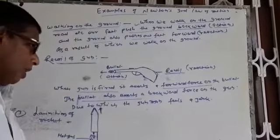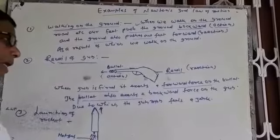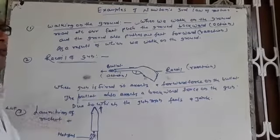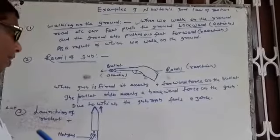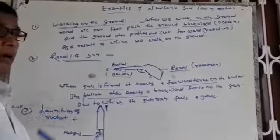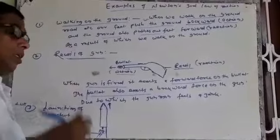Due to this, the gunman gets a backward jerk on the shoulder. That's why it is advised that when you fire the gun, you have to hold it tightly, otherwise it may injure.